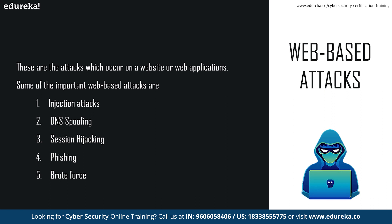Then we have phishing — a type of attack that attempts to steal sensitive information like user login credentials, credit card numbers, and more. It occurs when an attacker masquerades as a trustworthy entity in an electronic or community network. Moving ahead to brute force — it is a type of attack using trial and error, generating a large number of guesses to obtain actual data like user IDs and passwords. It may be used by criminals to crack encrypted data or by security analysts to test an organization's network security.